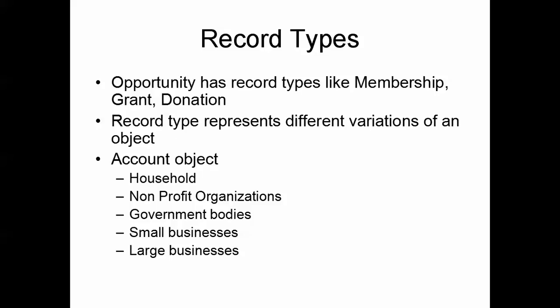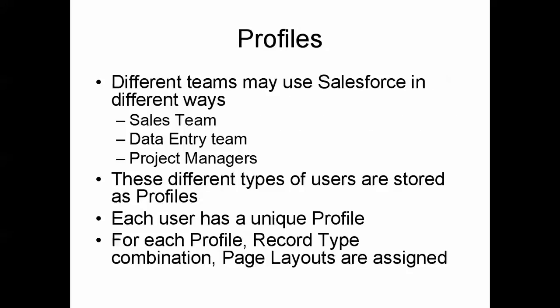This is implemented through record types. Salesforce has some pre-existing record types defined and we can add our own. These are available for both standard objects and custom objects. For example, in the case of Opportunity, we have five pre-existing record types like membership, grant, and donation.